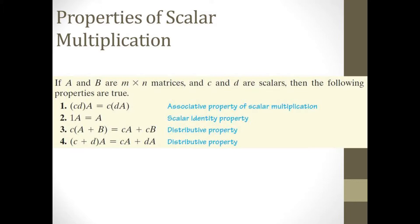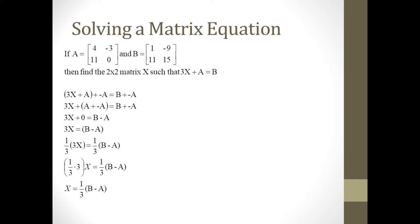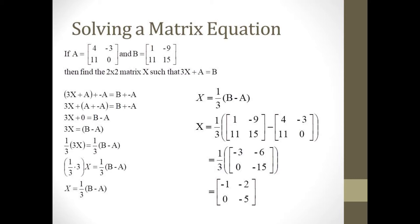For scalars, the number 1 is a multiplicative identity. The scalars distribute across matrix addition and matrices distribute across scalar addition. Using these properties, we can solve simple linear matrix equations. Given matrices A and B, find matrix X such that 3X plus A equals B. We add negative A to both sides, giving 3X equals B minus A. Then multiply both sides by one-third to get X equals one-third times B minus A. Plugging in matrices A and B, we get X equals the matrix negative 1, negative 2, 0, negative 5.